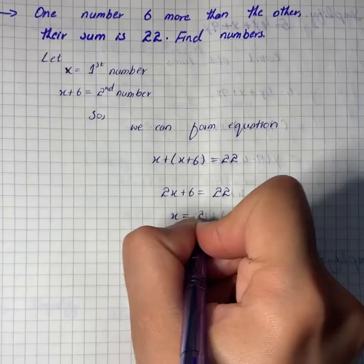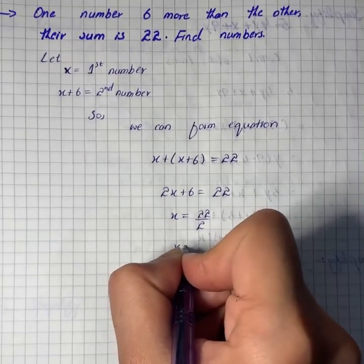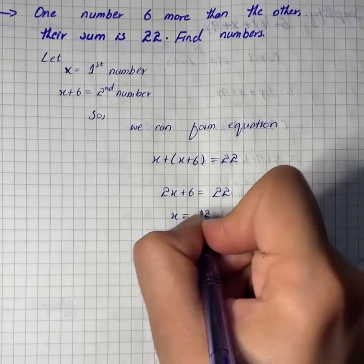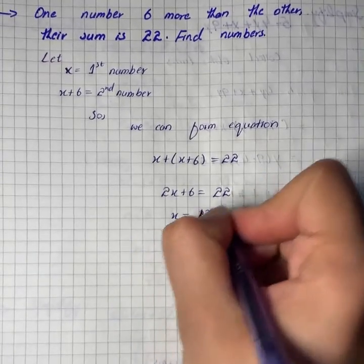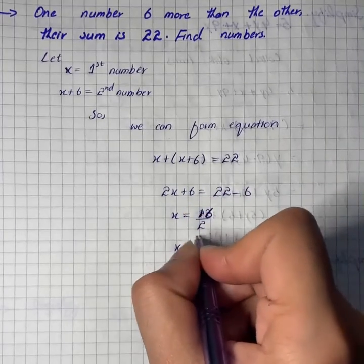So 2x equals 22 minus 6, which is 16. Therefore x equals 8.